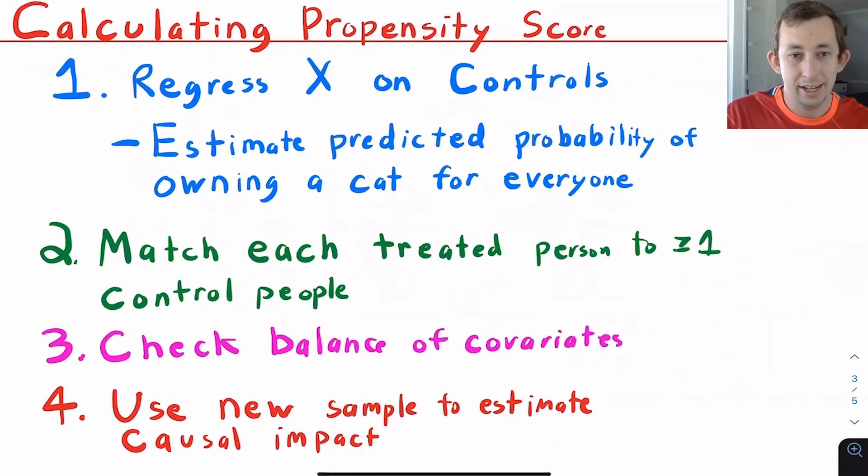And you're going to use that to predict your X value for each person in both your treatment group and your control group. So that's like that 60% that we estimated for Bill and Esther. We regress whether or not you have a cat, that dummy variable 0-1, on your observables. And maybe for both Bill and Esther, we get 0.6.